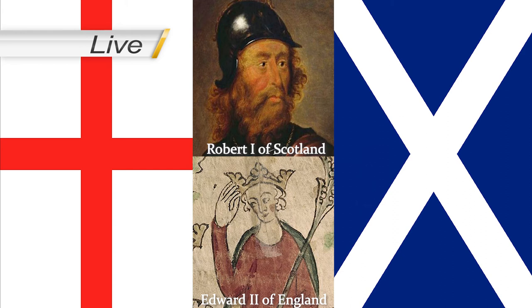It's now 1320 and the Pope has excommunicated Bruce. In response, he and the Scottish aristocracy have written the Declaration of Arbroath, which includes the immortal lines: 'While a hundred of us remain alive, we will not submit in the slightest measure to the domination of the English. We do not fight for honour, riches or glory but solely for the freedom which no true man gives up but with his life.' Meanwhile the truce with England has expired, and the Scots are raiding the north of England with renewed aplomb, trying to goad Edward away from the potential civil war he's facing.